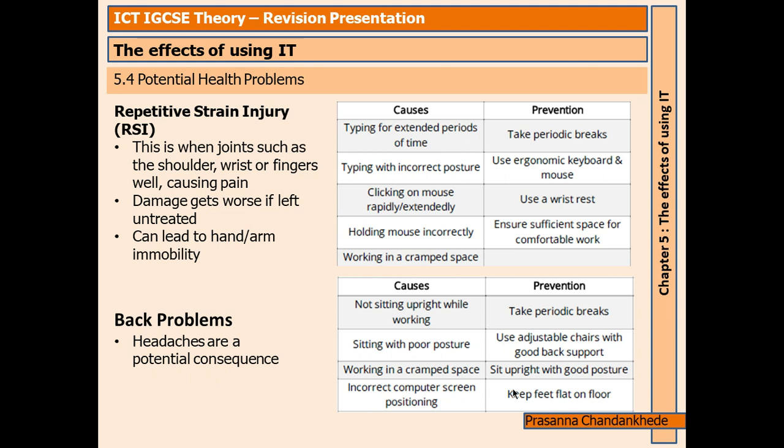Causes of RSI include: typing for extended periods without breaks, incorrect posture, rapidly clicking the mouse, holding the mouse incorrectly, and working in a cramped space. Prevention includes taking periodic breaks — for example, studying for 30 minutes then taking a five-minute break.